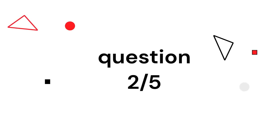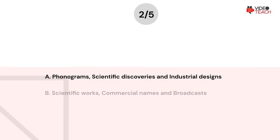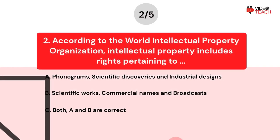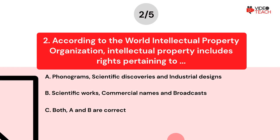Question number two. According to the World Intellectual Property Organization, intellectual property includes rights pertaining to: Option A — phonograms, scientific discoveries, and industrial designs. Option B — scientific works, commercial names, and broadcasts. Option C — both A and B are correct. Now you have about 15 seconds to think about your answer.